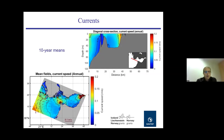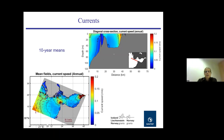For currents, the mean fields for the 10-year simulation show an anti-cyclonic circulation outside the entrance of the Gulf of Patras, with stronger, intensified current at the tip and at the sound. We can see stronger currents in red color close to the tip, and lower current speeds vertically and towards the open ocean.